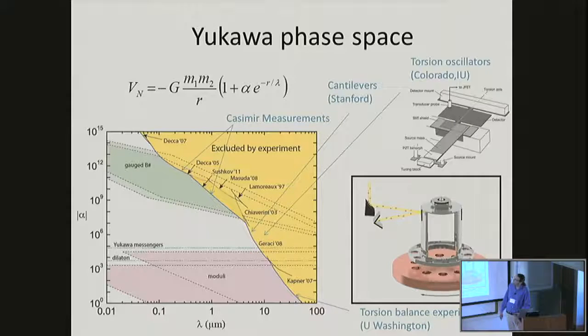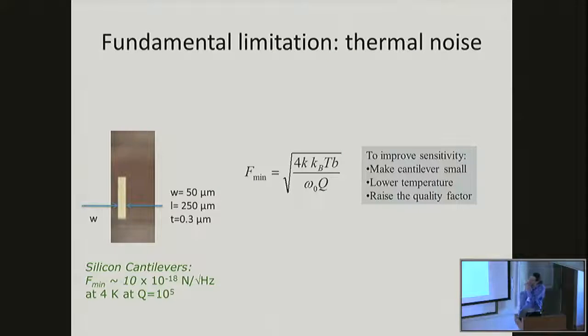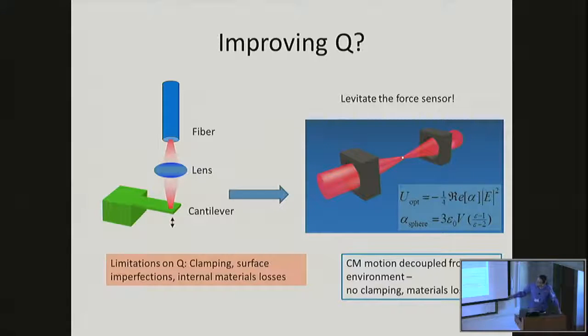If I want to start to dig further into this parameter space, in particular on the shorter length scale of this plot, I need to improve my sensitivity. I can ask, how can I try to improve this fundamental limit from thermal noise? If I look at the scaling of this formula, we can make the device smaller, we could lower the temperature in the numerator, or we can raise this mechanical quality factor. What we can do with AMO techniques is work on this last idea where you raise the quality factor.